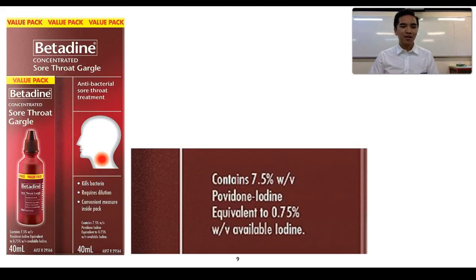This is an image of a sore throat gargle. If ever you suffer from a sore throat, I definitely recommend that you actually try this. It definitely works wonders for me. We can see here the active ingredient is povidone iodine and it has a concentration of 7.5% weight per volume. So that tells us that we have 7.5 grams of povidone iodine per 100 ml of this sore throat gargle.